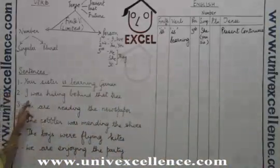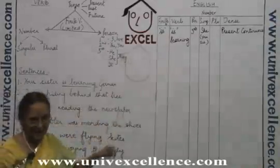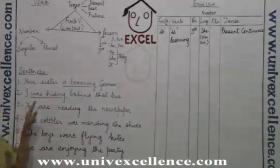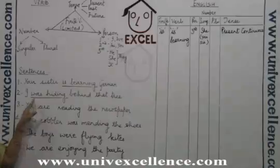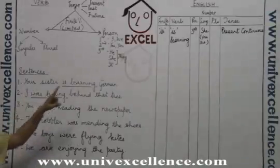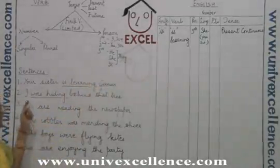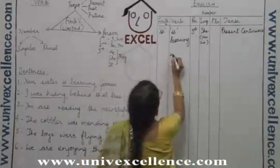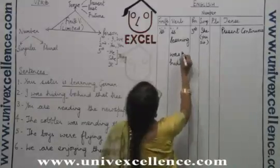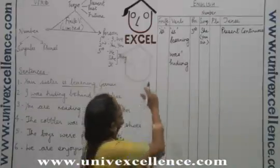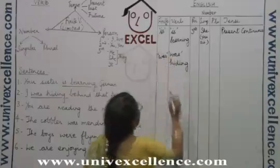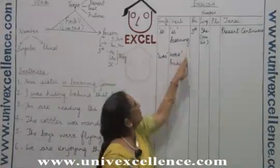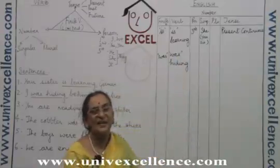The second sentence is: 'I was hiding behind that tree.' The verb here is 'was hiding.' 'Was' has been used because the subject is 'I,' which is the first person in singular number. So we write 'was hiding.' The finite verb is 'was,' because the -ing form is in this verb too. Therefore the -ing form verb is not to be considered as a finite verb.